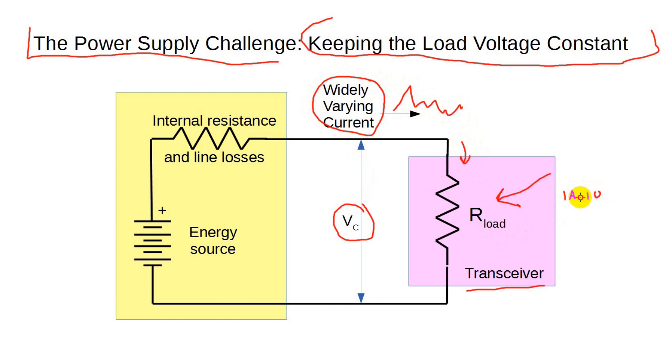And for HF, a single sideband transmission represents a highly variable load. This can be a real challenge to a power supply designer, because the load resistance is changing all the time. The design goal is that V sub Cs stay constant or nearly constant.